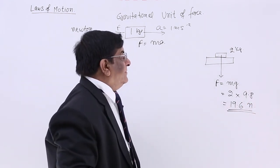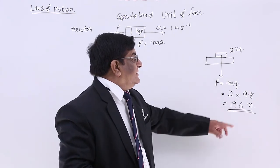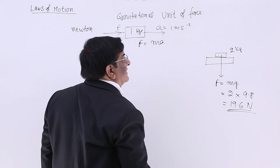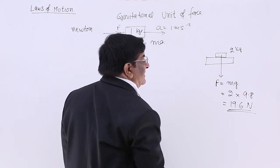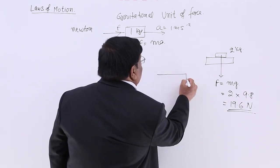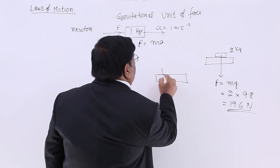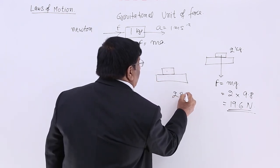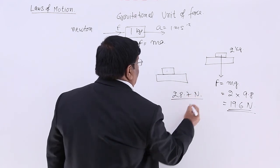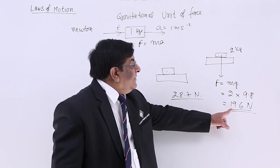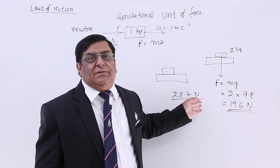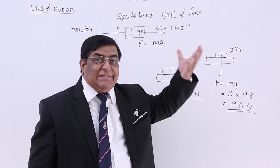For a layman, 19.6 Newton is a bit difficult to understand. If I tell him that this book is pressing the table by 19.6 Newton and this box is pressing with 28.7 Newton, then it is very difficult for him to comprehend, how to compare this, how to visualize this.